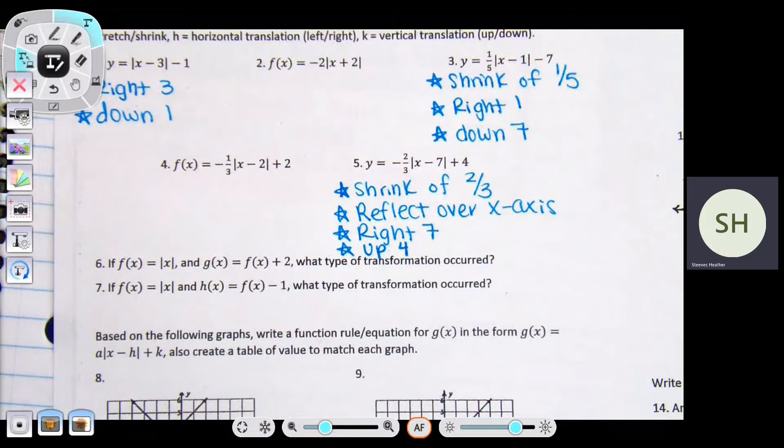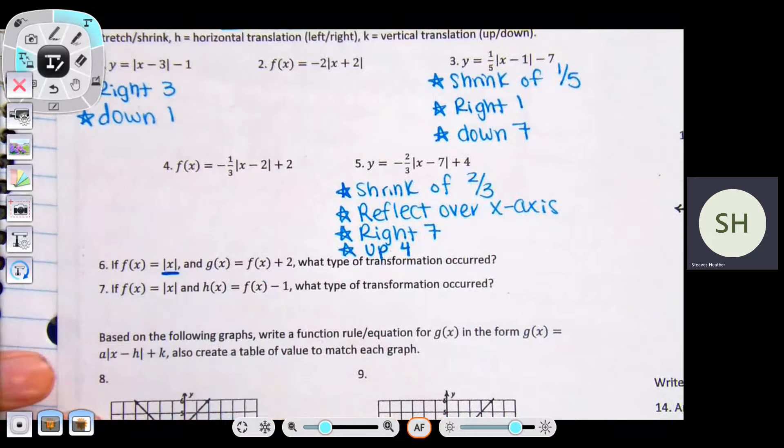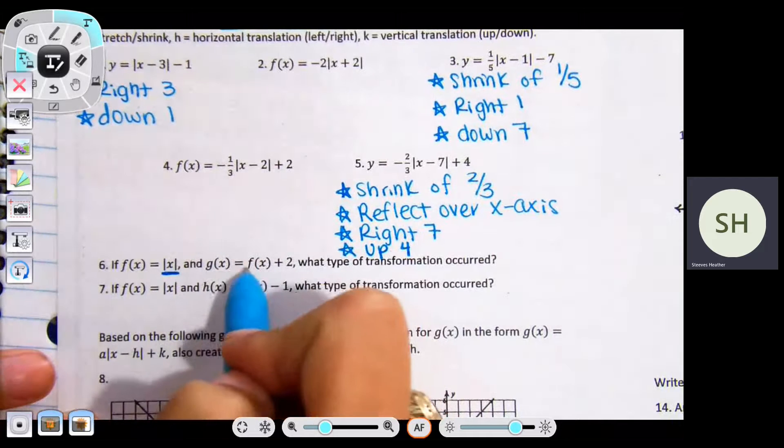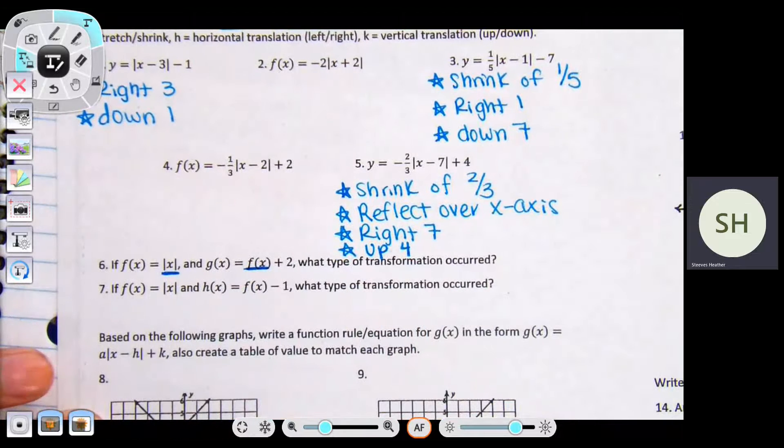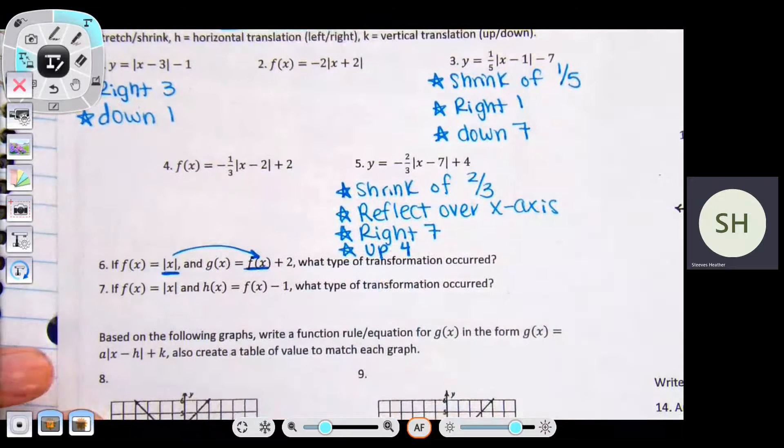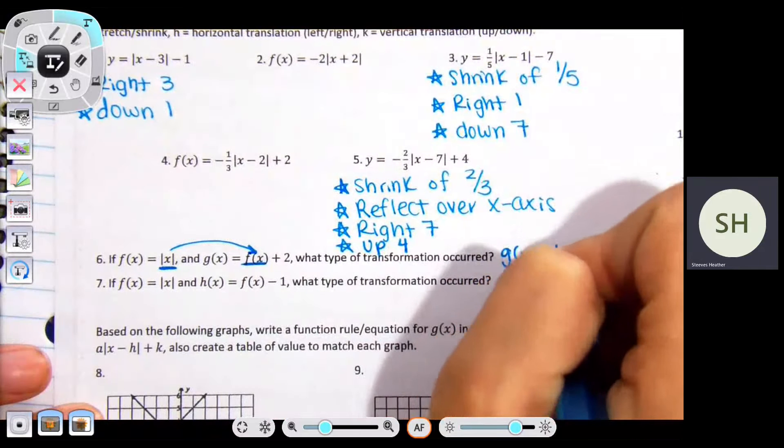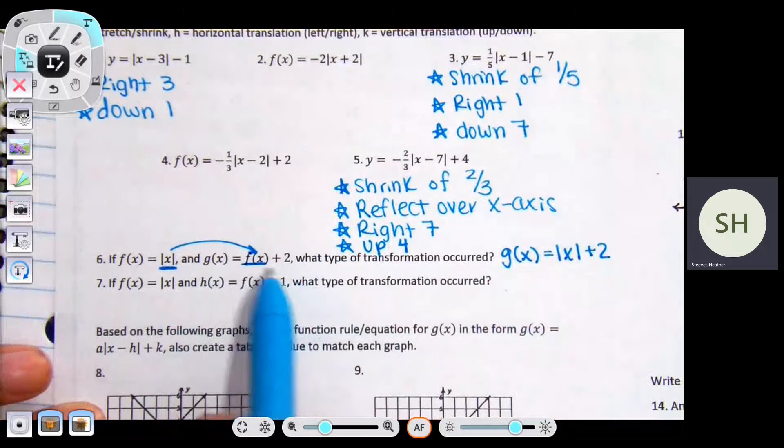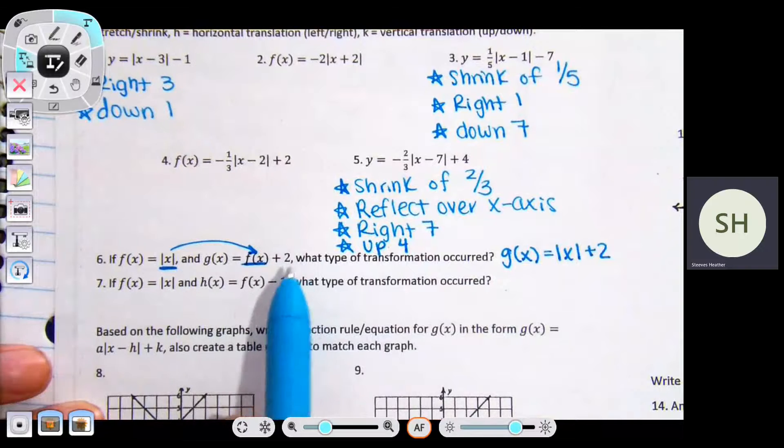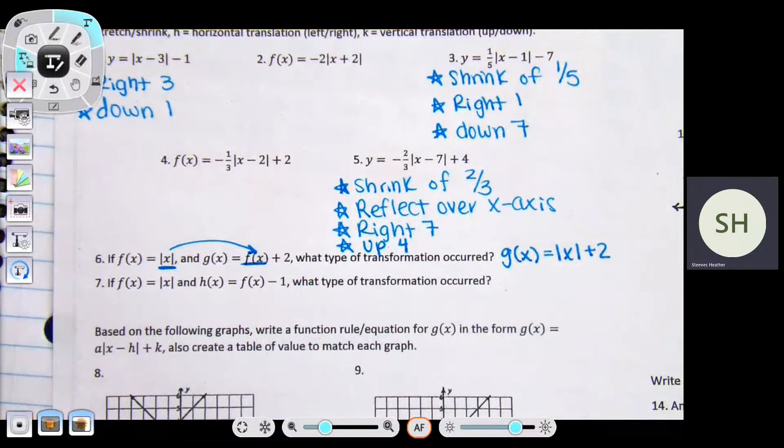Let's talk about number six. It says if F of x equals the absolute value of x, and G of x equals F of x plus two, what transformation was being done? I want you to think about this as like substitution. Can't I just replace F of x in the other equation with the absolute value of x? You just plug in absolute value of x plus two. You should be able to just look at this and realize what transformation is being done. If it's outside of the brackets, do I say left, right, up or down two? Up two.